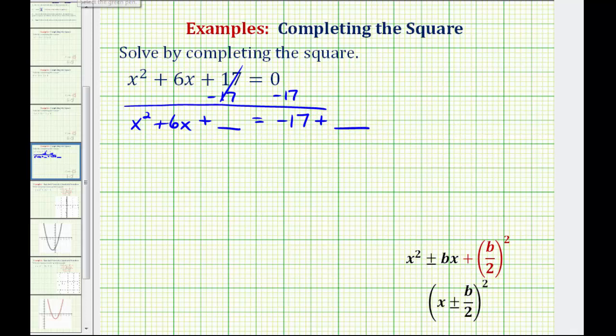Now the next step is to determine the constant that we're going to add here so this will be a perfect square trinomial. So let's review these notes down here at the bottom. If we have a perfect square trinomial with a leading coefficient of 1, then the constant term is going to be b divided by 2 squared, where b is the coefficient of the x term. So looking at our example, notice that b is equal to 6.